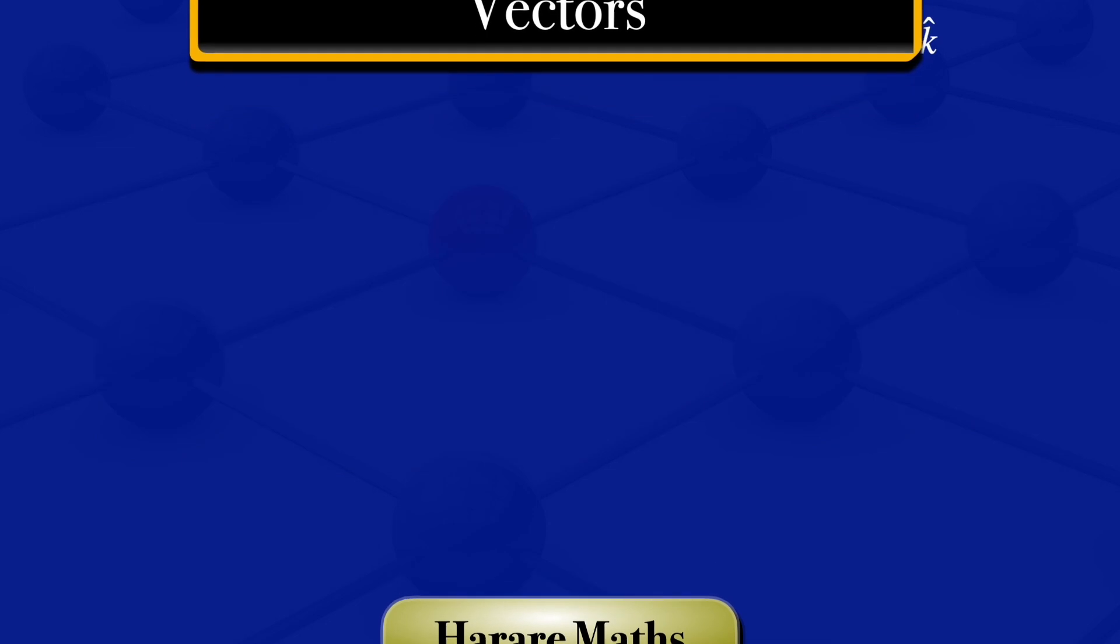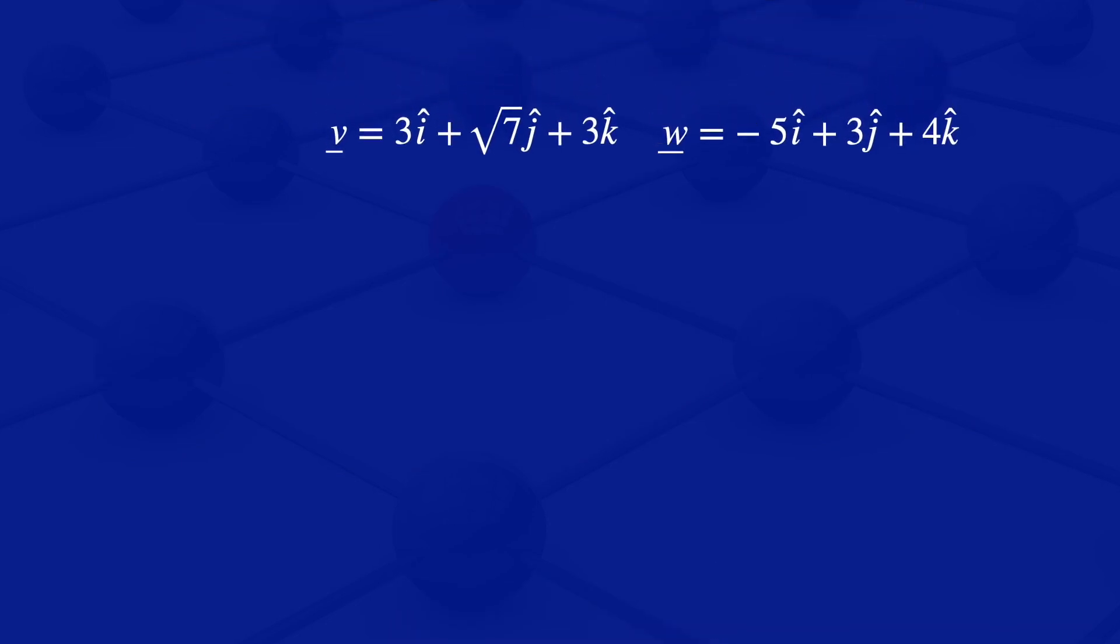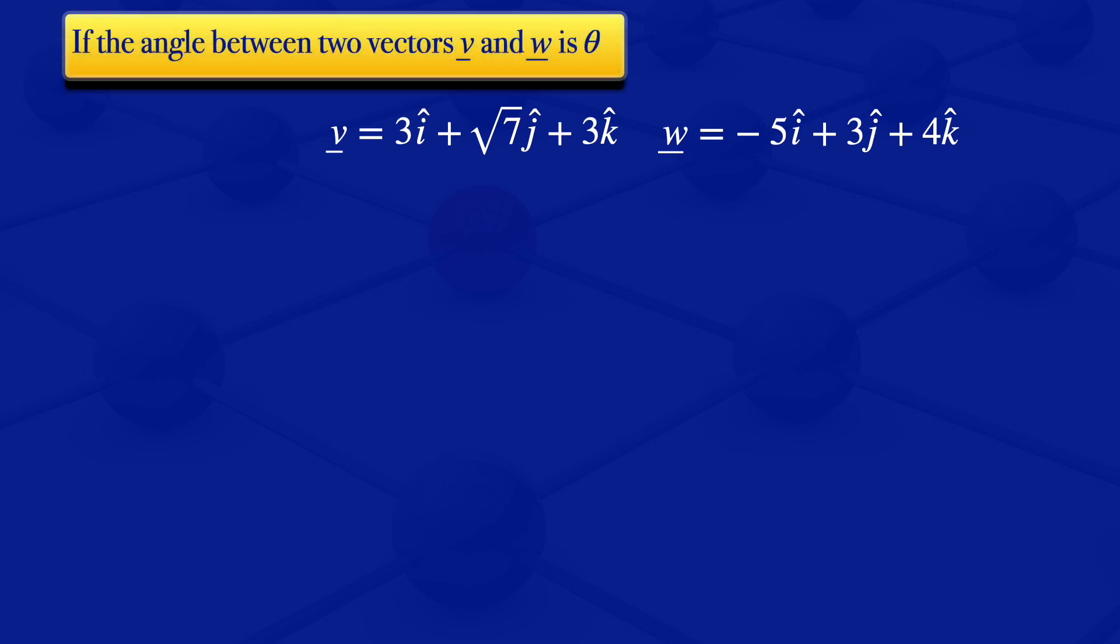So we have those two vectors V and W. If the angle between the two vectors V and W is theta, then to find the angle theta, we can use the formula which says that cosine of theta is equal to the dot product of V and W divided by the norm of V multiplied by the norm of W.